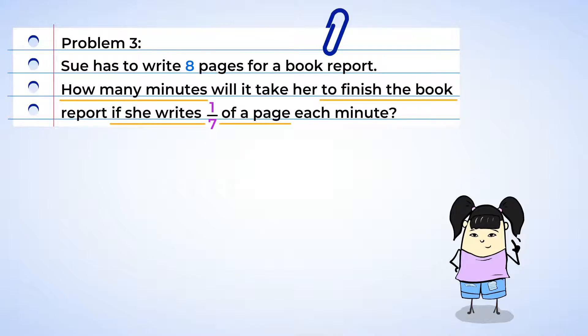Well, that sure is a super practical problem. It could even help you manage your own time when it's your turn to write a book report. All right, so the total is eight pages for the book report, and it's being divided into groups of one-seventh because she writes one-seventh of a page every minute. We can create an expression of eight divided by one-seventh.